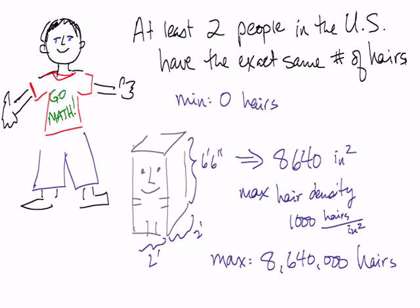You can check these numbers out for yourself. You're still going to be in the ballpark. Well, how many people are in America? About 300 million. So our pigeons are people. Our pigeon holes are the number of hairs. Well, we've only got 8.6 million pigeon holes to stick 300 million pigeons in. So at least two people in the U.S. have the exact same number of hairs.